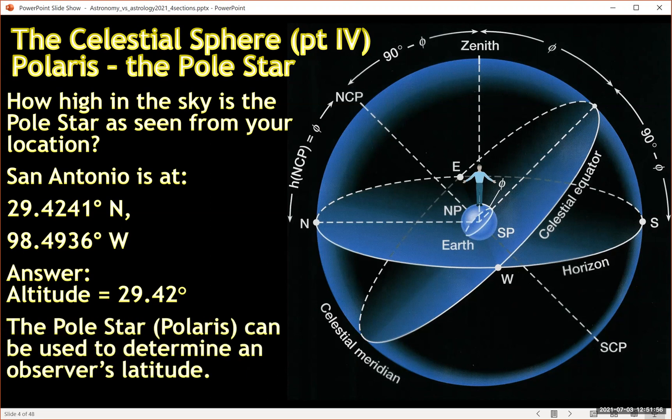But consequently, if you know how to identify Polaris, you can do the reverse and figure out your latitude. So this is very important for navigation.